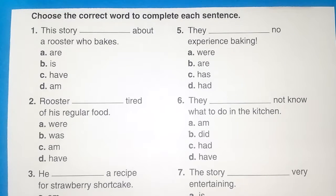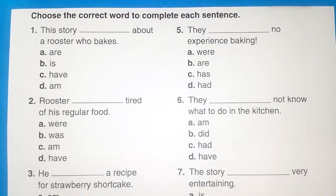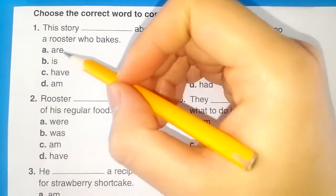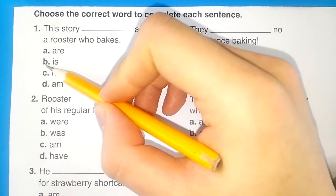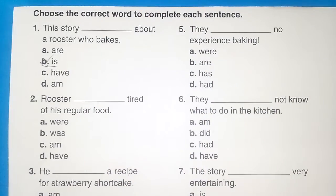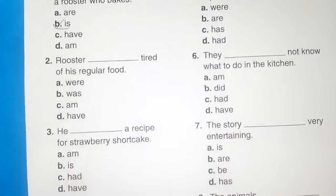Choose the correct word to complete each sentence. Question 1: This story about a rooster who makes... This story is a simple one. And now, B. The answer is B, simple.